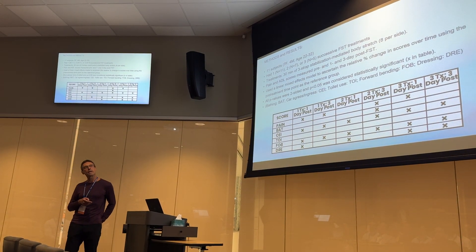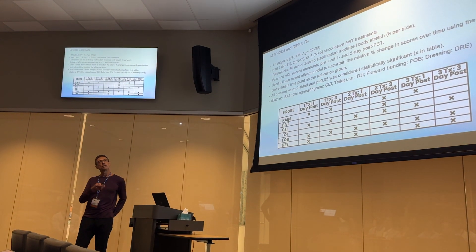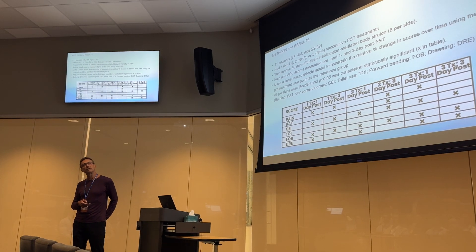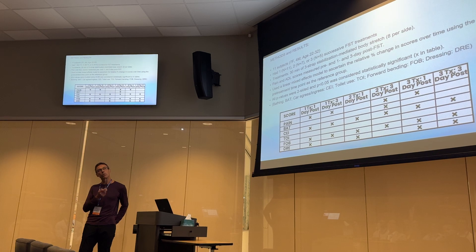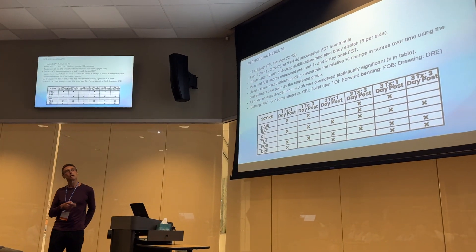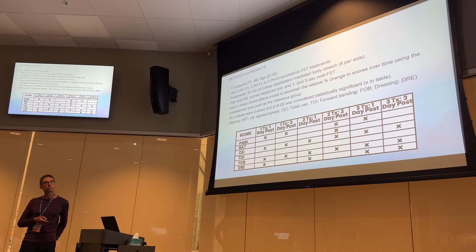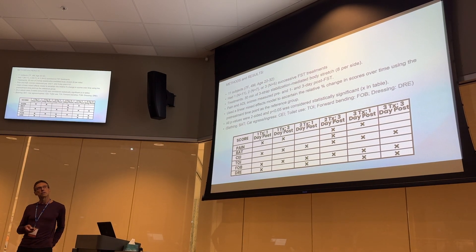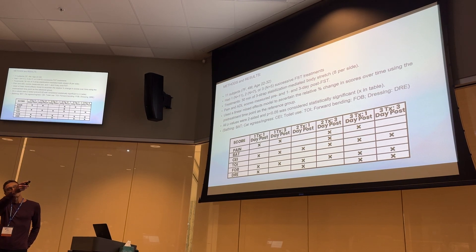Pain and ADL scores were measured pre- and one and three days post-FST. On the table you can start to see the distribution of improvements. We used a linear mixed effects model to ascertain the relative percent change in scores over time using the pre-treatment time point as the reference group. Because we didn't have a control group, we had something to reference at pre-treatment. All p-values were two-sided and p less than 0.05 was considered statistically significant, marked by the X's in the table.